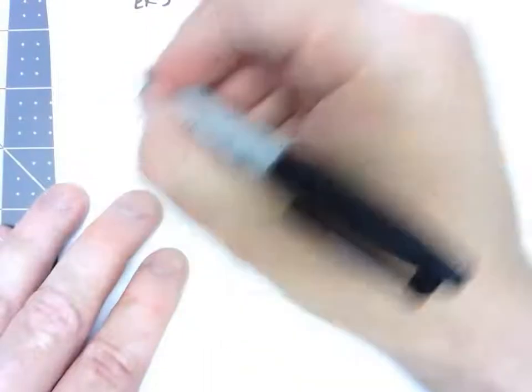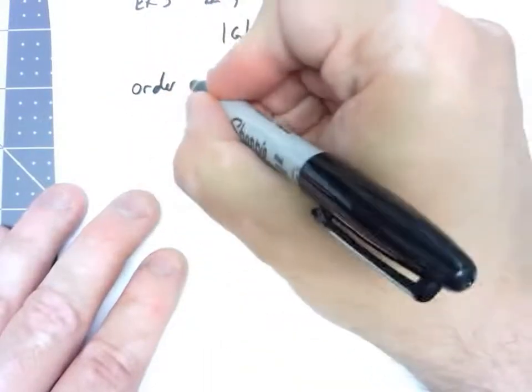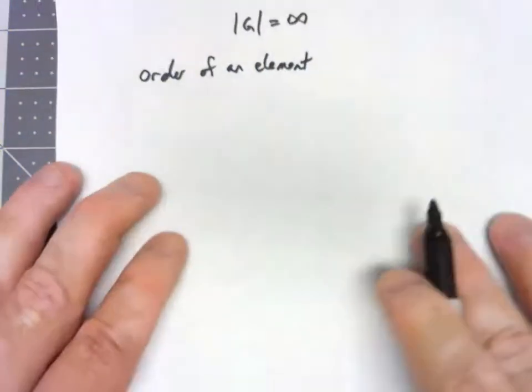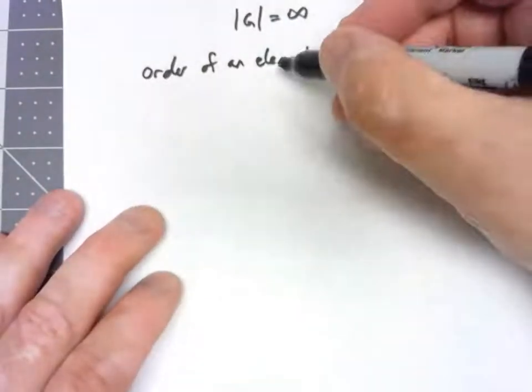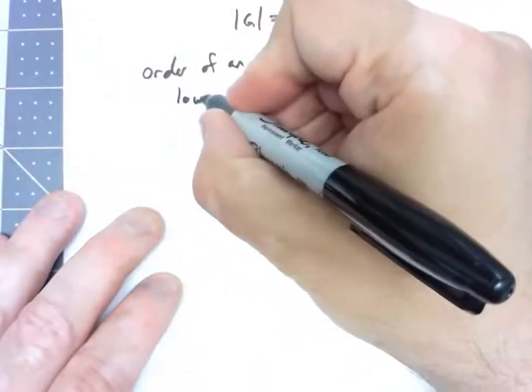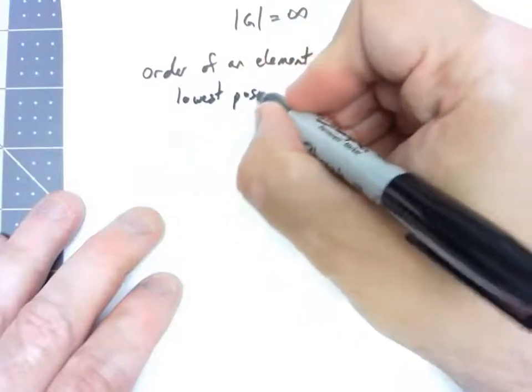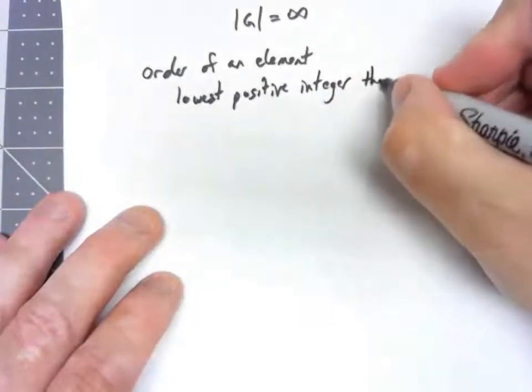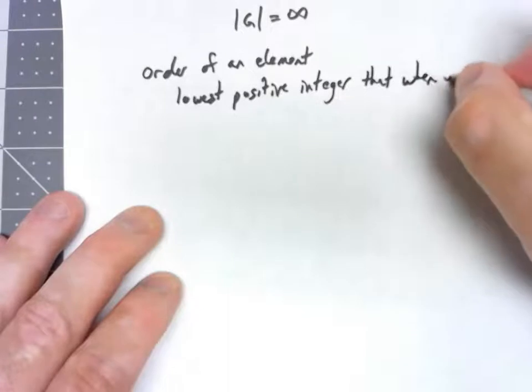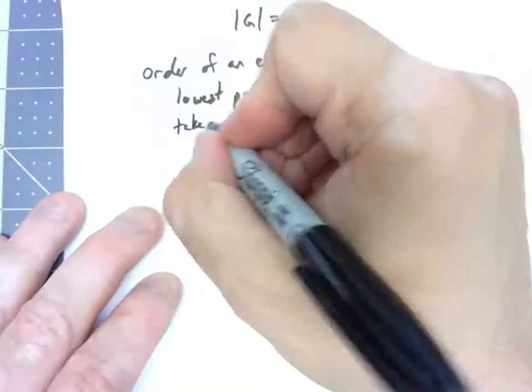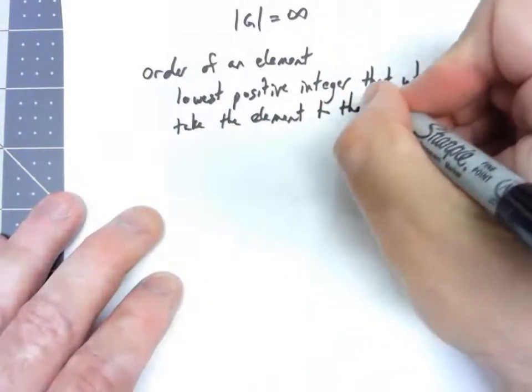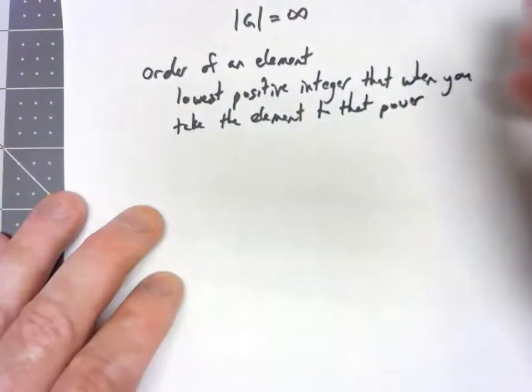There's also, we can talk about, the order of an element in a group. And what the order of the element is, is it's the lowest positive integer, that when you take the element to that power, you get the identity.